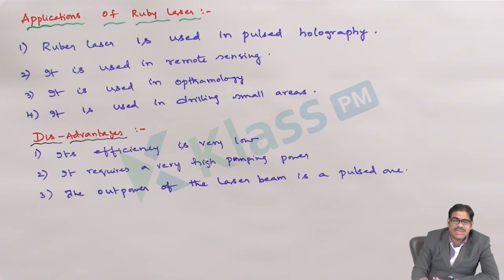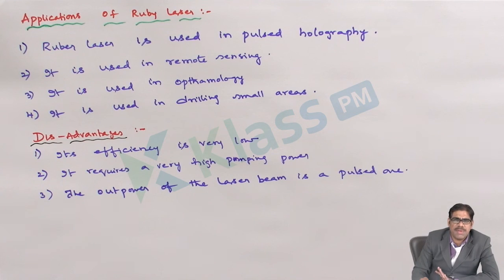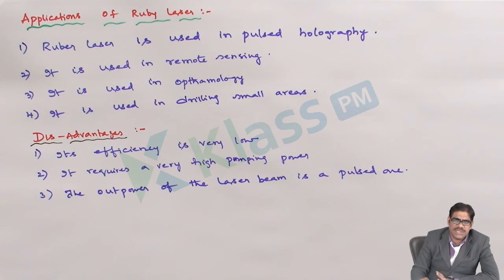Overall, its efficiency is on the lower side, so the Ruby laser cannot be considered ideal for achieving the lasing process. Thank you.